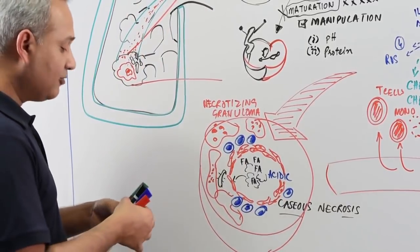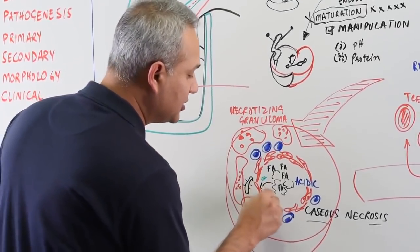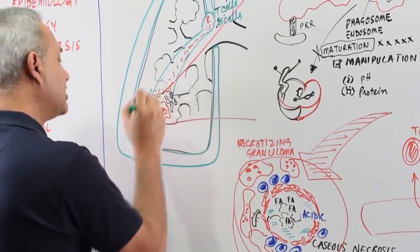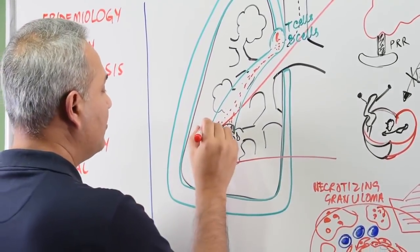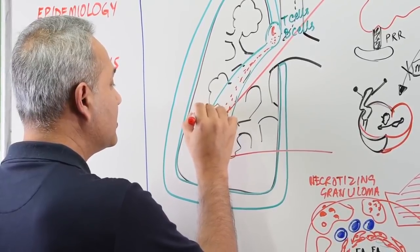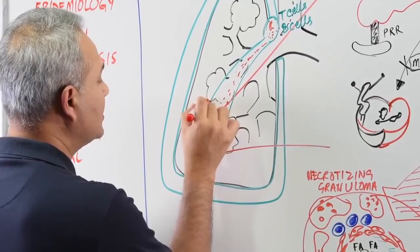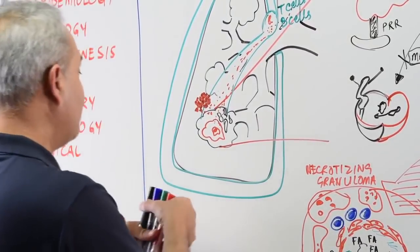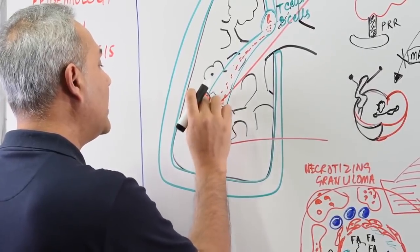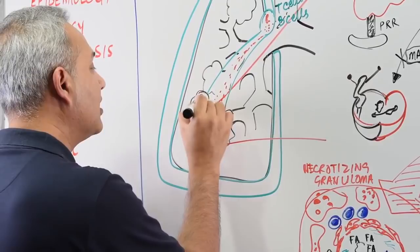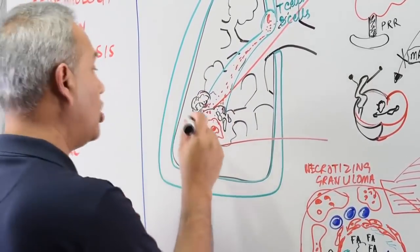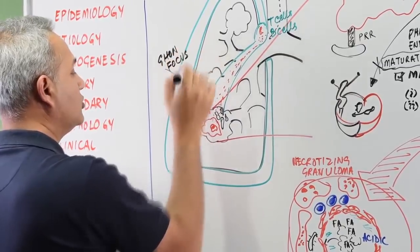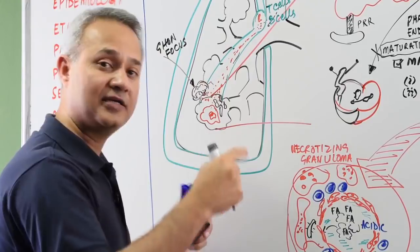So, granuloma formation would occur. That would also mean that calcification, wherever there is damage, there is calcification. Calcification would occur. So, when this granuloma would occur, it is a microscopic structure. But when multiple granulomas would keep appearing and they will keep fusing with each other, slowly this microscopic structure will become macroscopic. You can actually see it with the naked eye. And I will show you the diagram for it. When you can see it with the naked eye, you would see a cheese-like white, cheese-like consistency and structure. This is called Ghon focus.